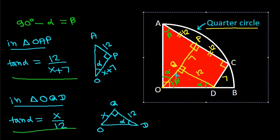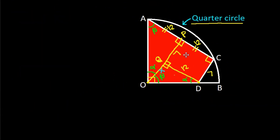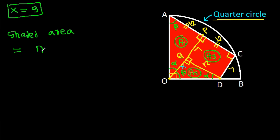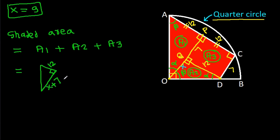With X = 9, the shaded area equals A1 + A2 + A3, where A1 is the area of a triangle with height 12 and base X + 7 = 16, A2 is the area of a triangle with base X = 9 and height 12, and A3 is the area of a rectangle with sides 7 and 12.